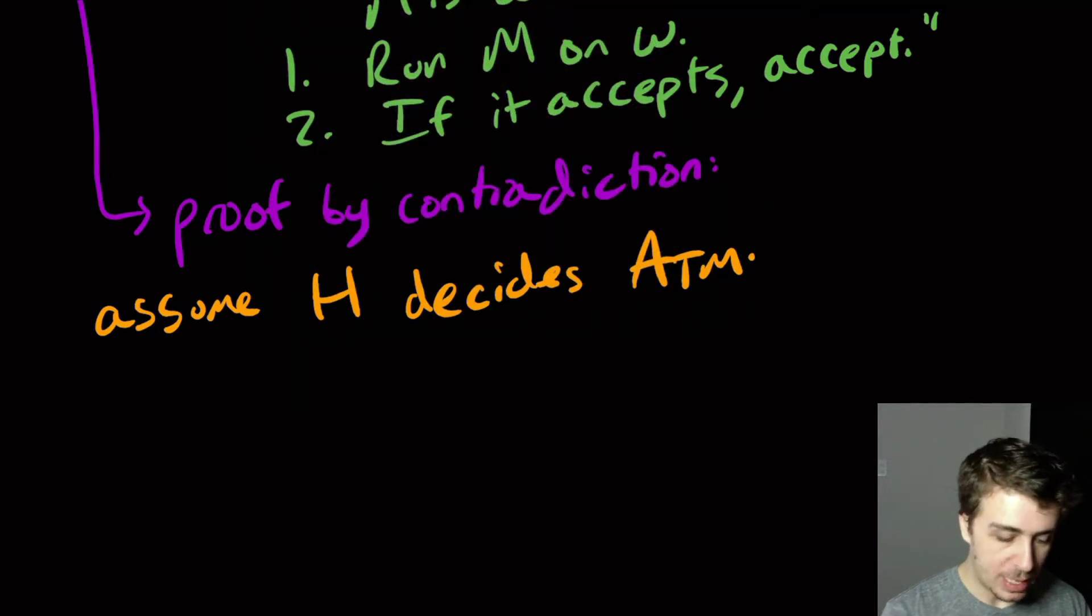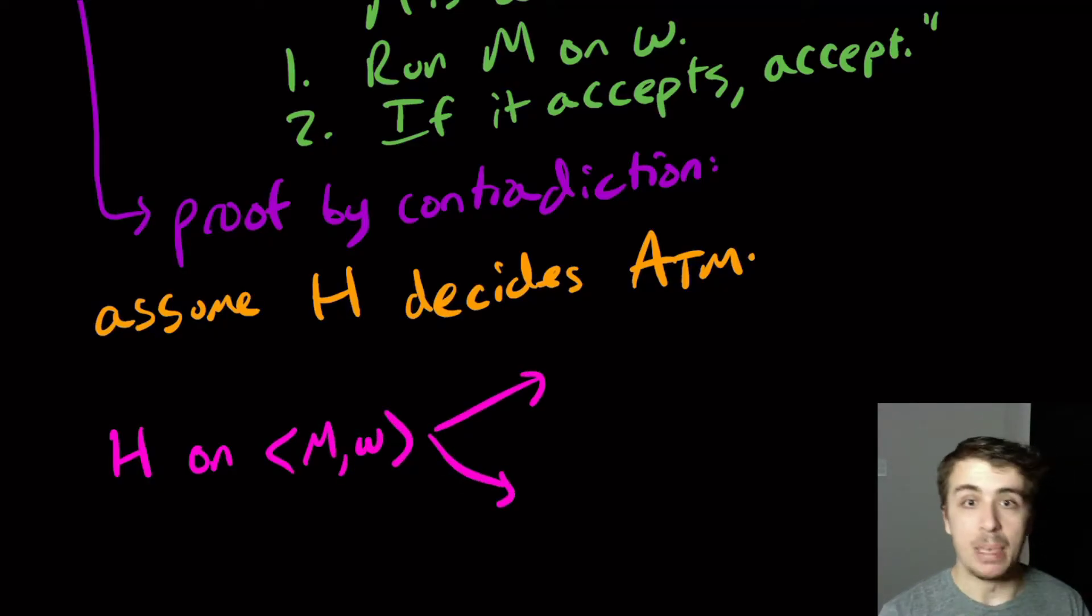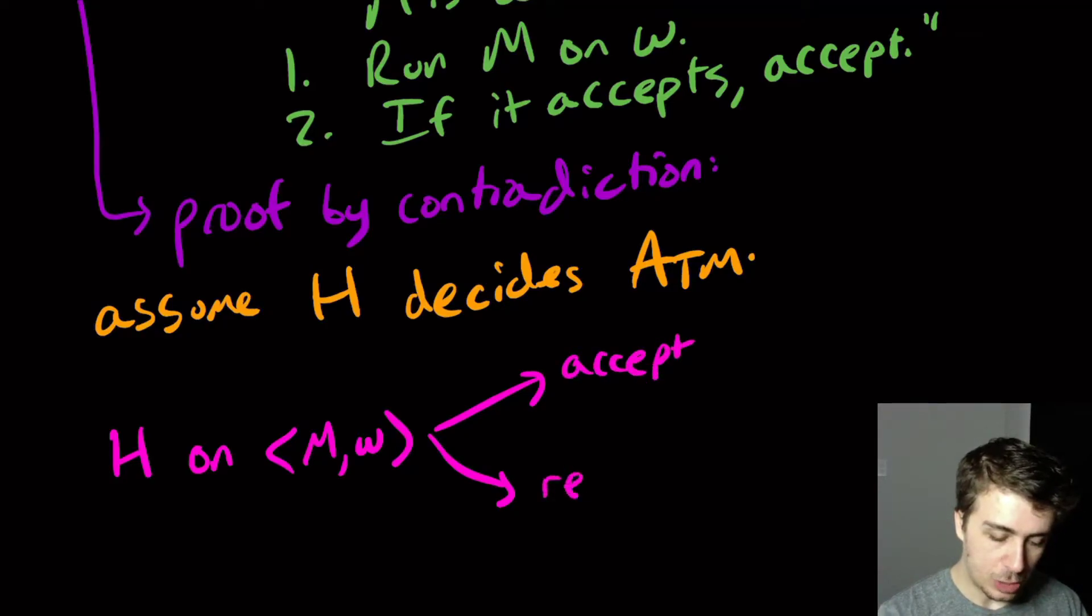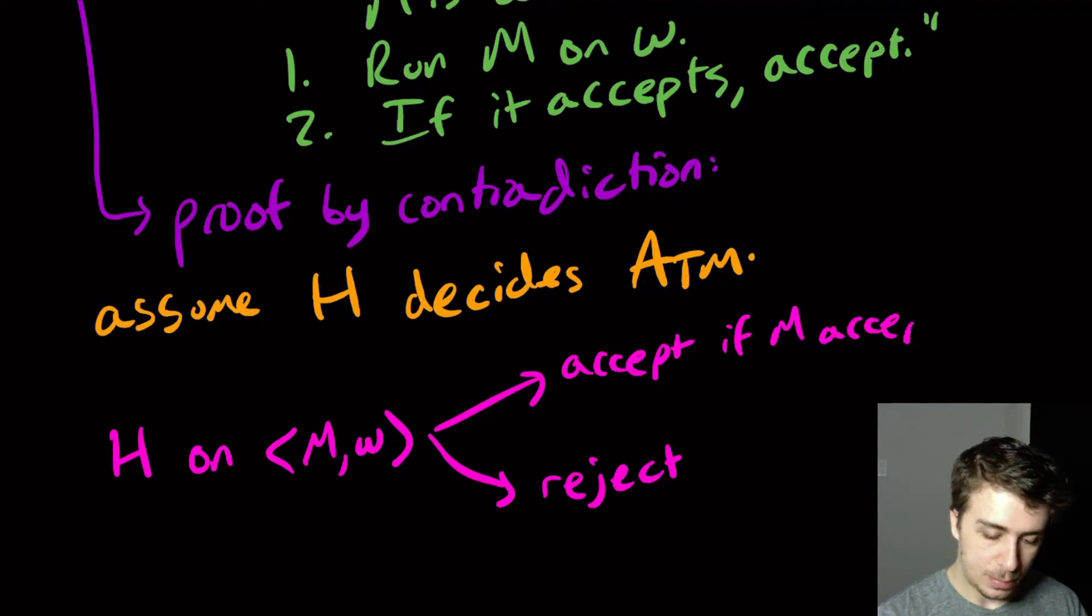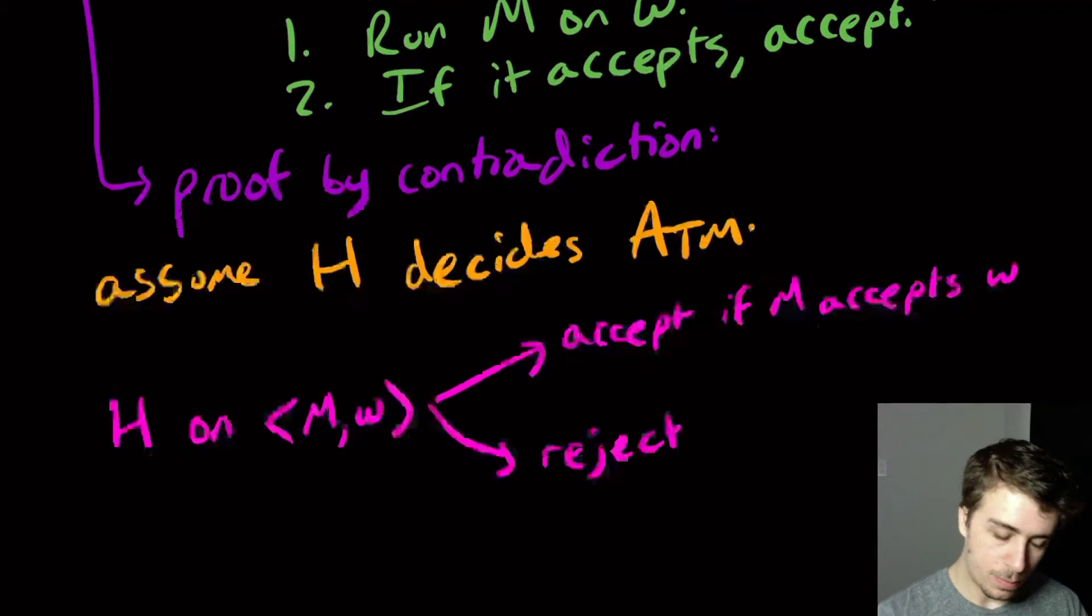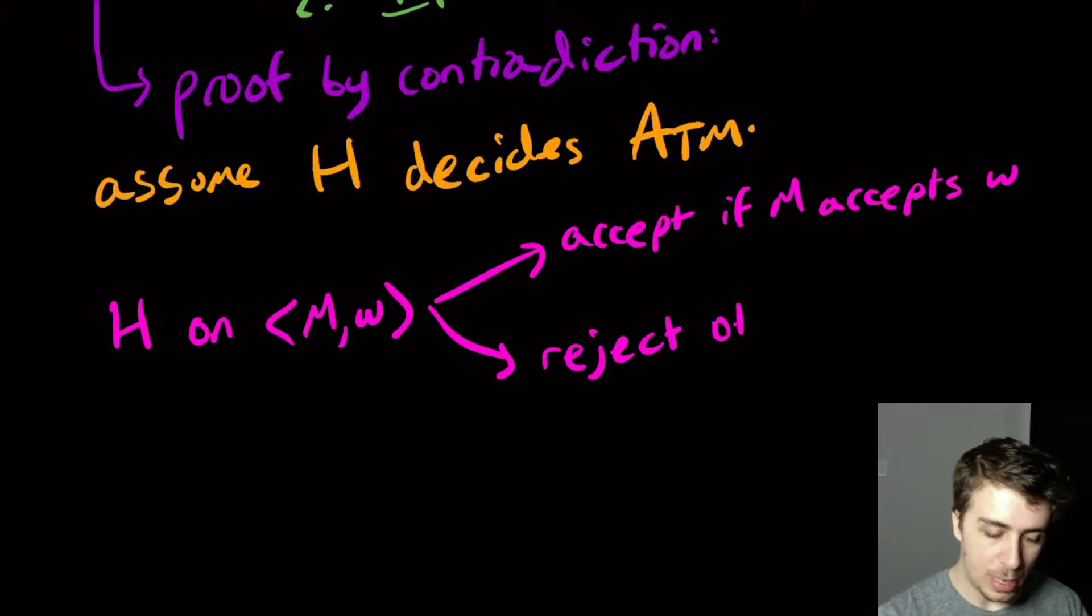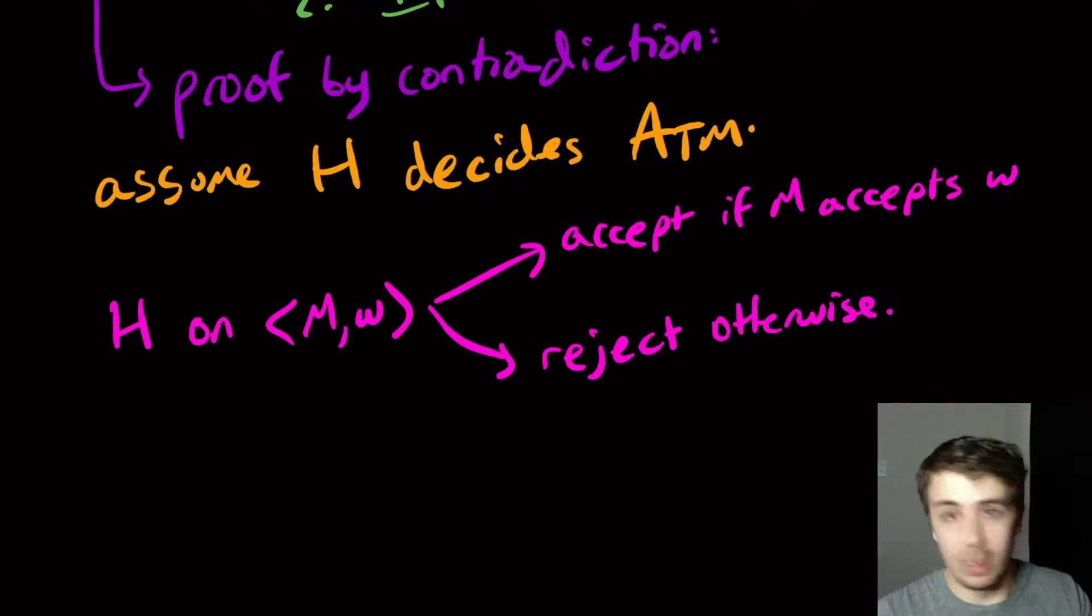And just for posterity, H, when given the input pair M W, since it's a decider, it must do one of two things. It's going to either accept or it's going to reject. It can't run forever because it's a decider by assumption. So if it says accept, that means M accepts W. And it's going to reject otherwise. Because that's just what the definition of the machine is. But it is for posterity is just to get a good idea of what the machine actually does, because we're going to do it on the later machine here.